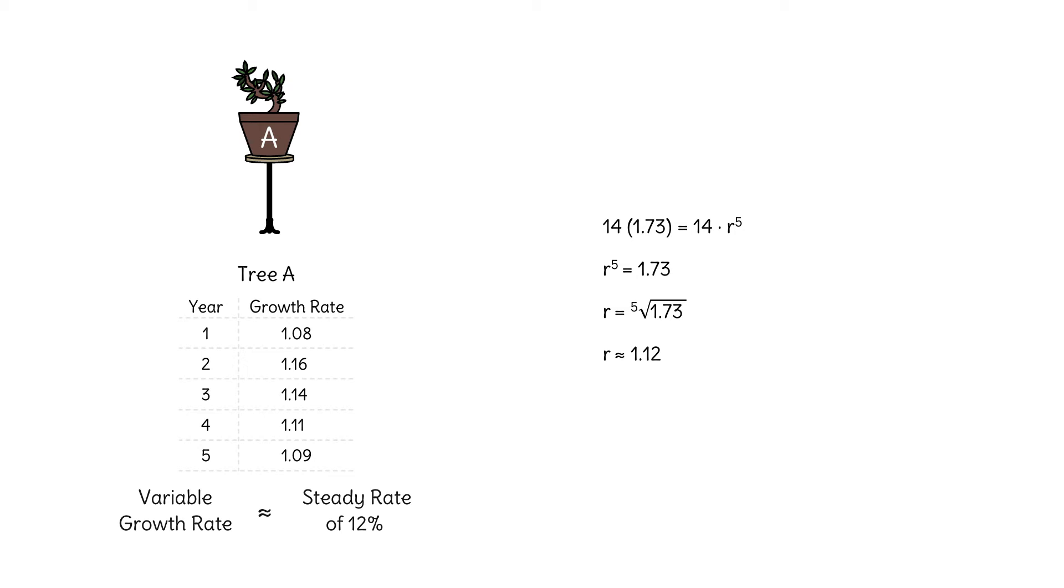This number is called the geometric mean. In this example, we couldn't use the arithmetic mean of the variable growth rates. The geometric mean is a measure of center which deals with the fact that these rates are multiplied.